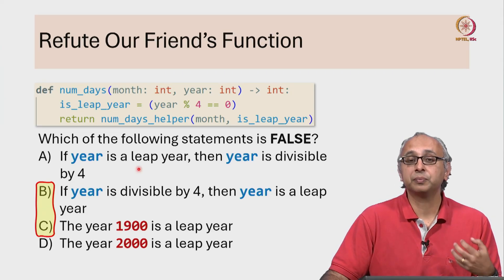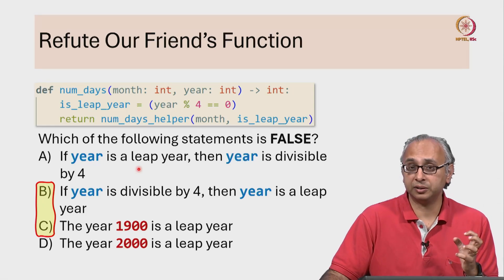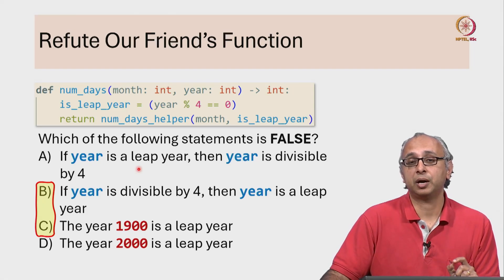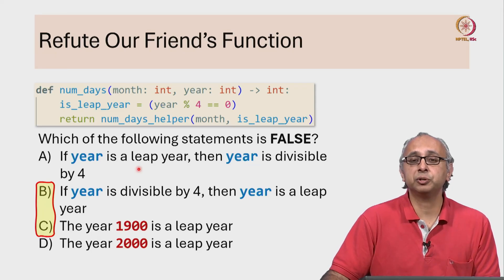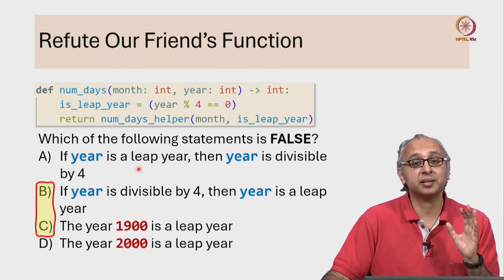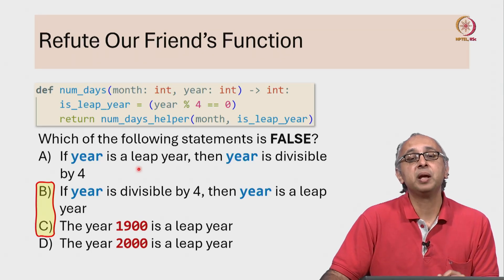That leaves years that are divisible by 4 but not all of those are leap years. So when you looked up the definition, you would have found out that you need to check amongst the years that are divisible by 4, are they divisible by 100?